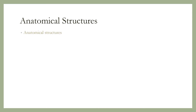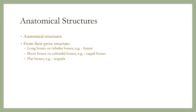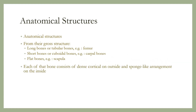From the anatomical standpoint, bones are classified as long bones or tubular bones, for example the femur; short bones or cuboidal bones, for example carpal bones; and flat bones, for example the scapula. Each of these bones consists of dense cortical bone on the outside and a sponge-like arrangement on the inside.